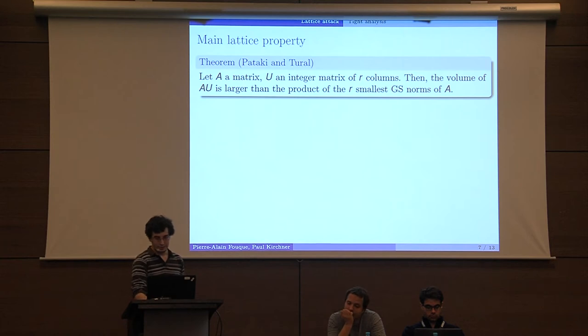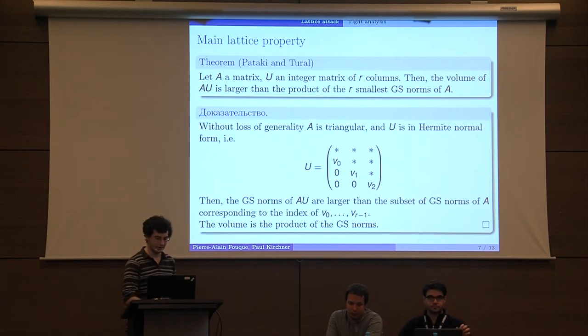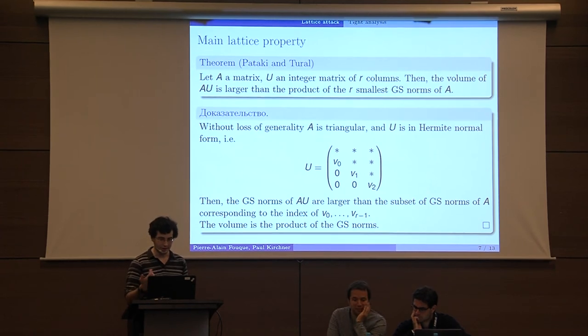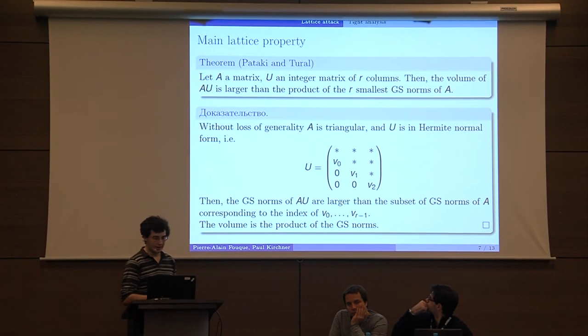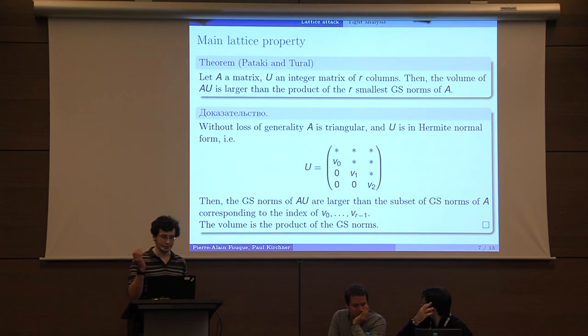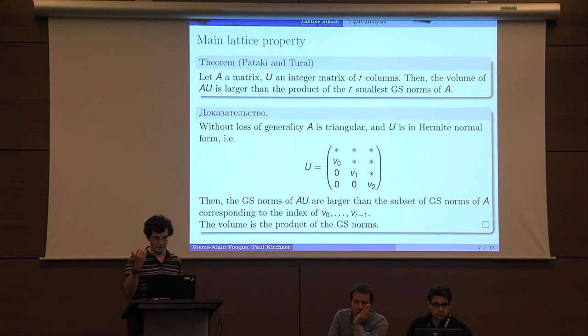If you have a matrix A and U an integer matrix with R columns, then the volume of the product must be larger than the product of the R smallest Gram-Schmidt norms of A. If you take R equal 1, then this gives the previous theorem. The proof is as follows: we can say that A is triangular due to Gram-Schmidt orthogonalization. We can also take U which is in Hermite normal form because we can multiply it on the right by any integer invertible matrix without changing the theorem. This means that we can have U in this form with any rows of star in it any number every time.